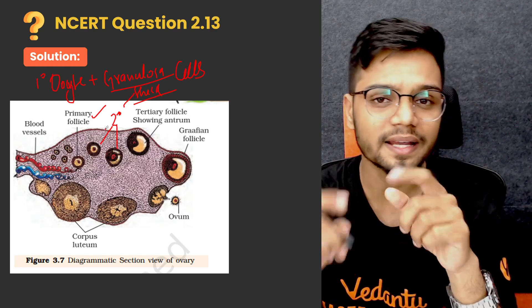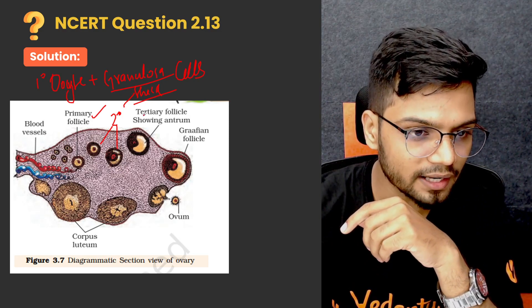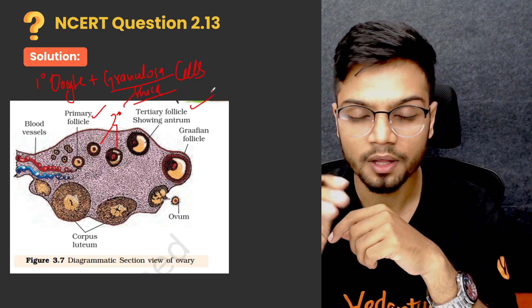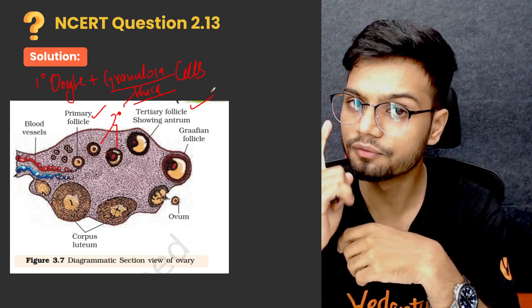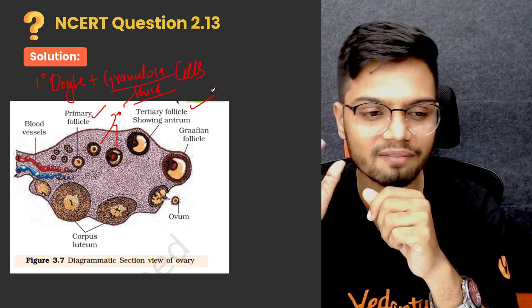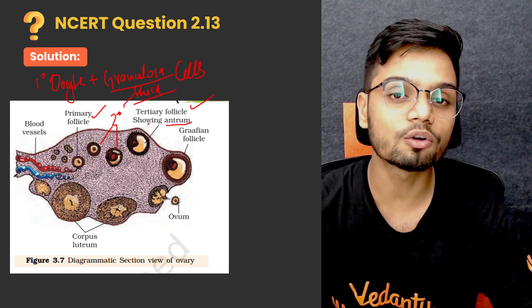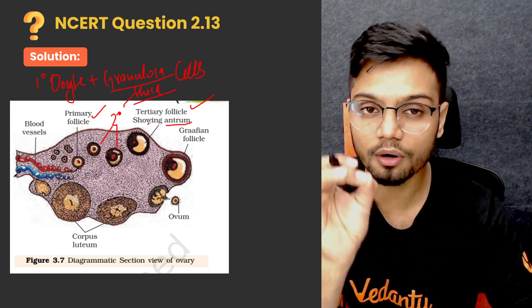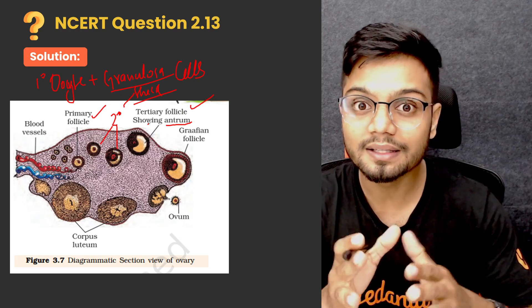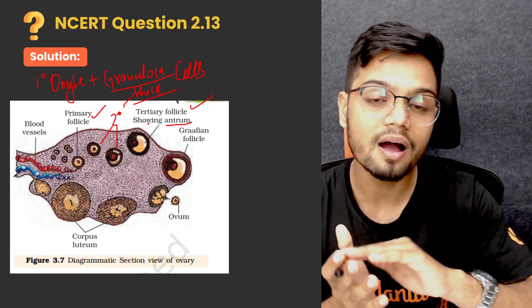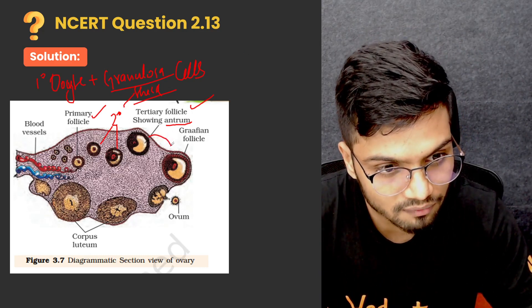The secondary follicle transforms into a tertiary follicle. Now here you need to know the important characteristics of your tertiary follicle. The first one is the fluid-filled cavity known as antrum — a fluid-filled cavity called antrum is a characteristic feature of your tertiary follicle. Along with that, the theca here gets differentiated into theca interna and theca externa.